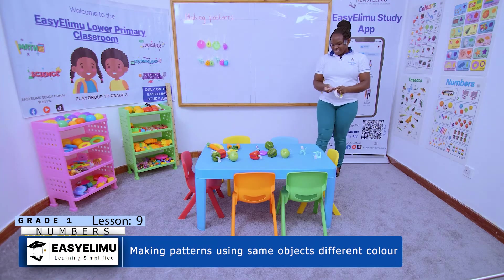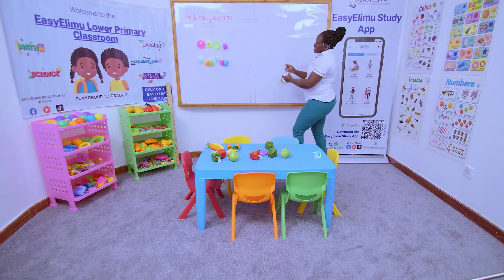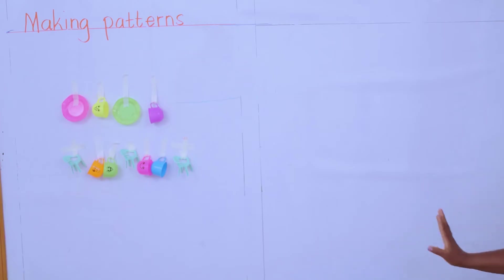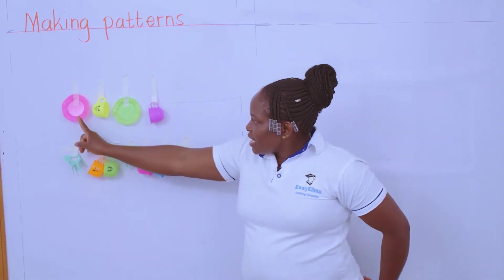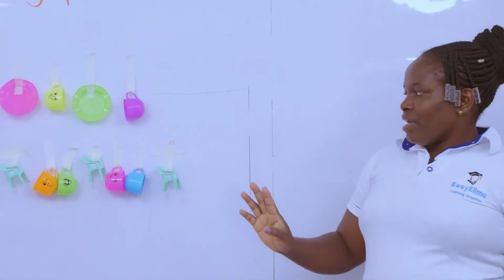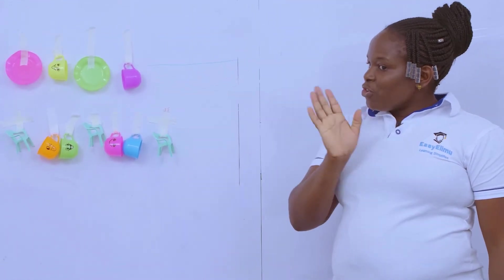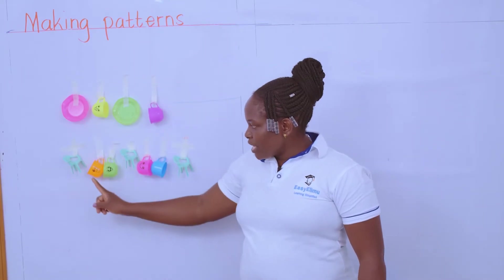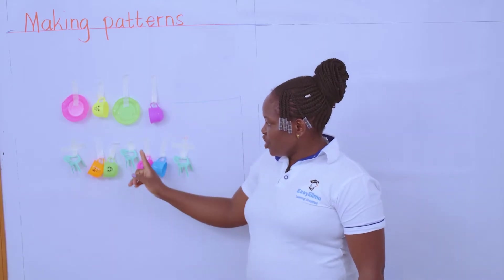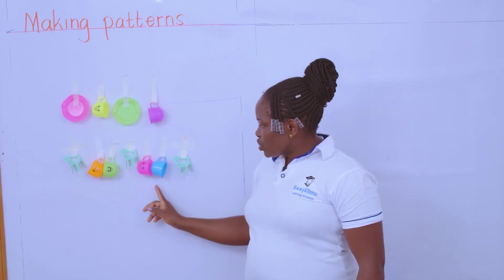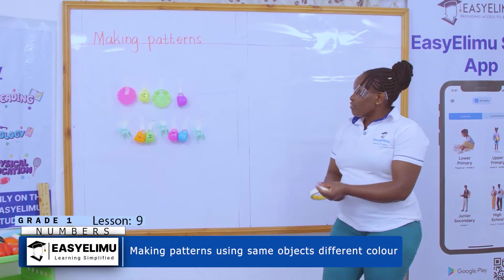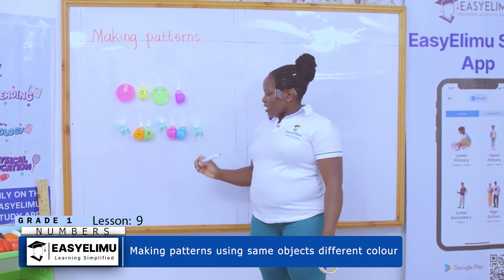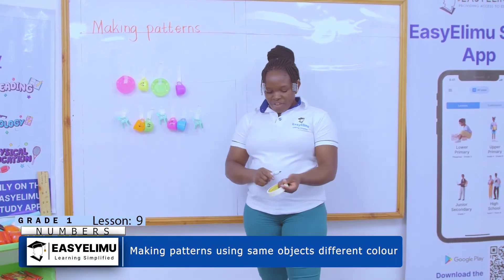What comes next? It is the chair! Have you seen my patterns and how I formed them? The first one: plate, cup, plate, cup — you know the answer in your heart. For this one: chair, then how many cups in the middle? One, two. Then again chair, how many cups in the middle? One, two. Then again chair.